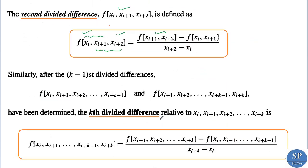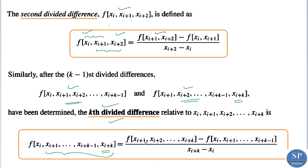Similarly we can define the kth divided difference. After obtaining the (k-1)th divided differences f[xi, x(i+1), ..., x(i+k-1)] and f[x(i+1), x(i+2), ..., x(i+k)], we determine the kth divided difference: f[xi, x(i+1), ..., x(i+k)] = [f[x(i+1), ..., x(i+k)] - f[xi, ..., x(i+k-1)]] / (x(i+k) - xi).